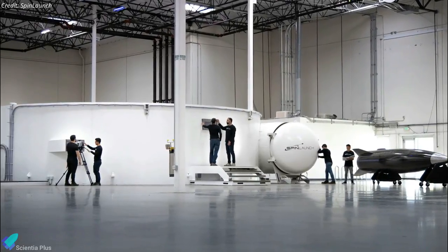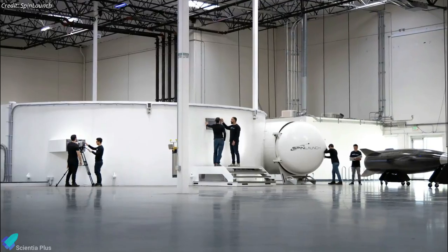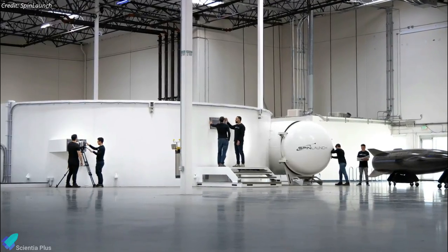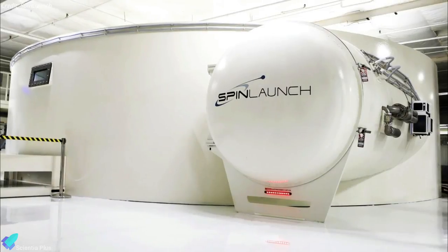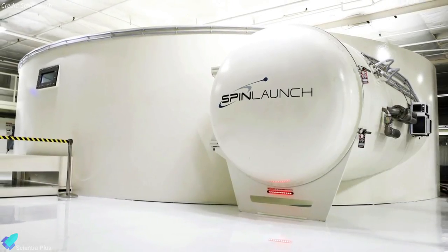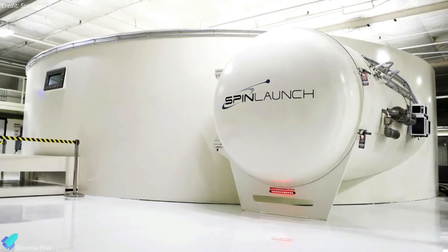It took the team eight months, a few vacuum pumps on eBay, and $500,000 worth of steel to build the world's sixth-largest vacuum chamber. While 12 meters across, this first centrifuge model was still too small to slingshot a rocket into space.